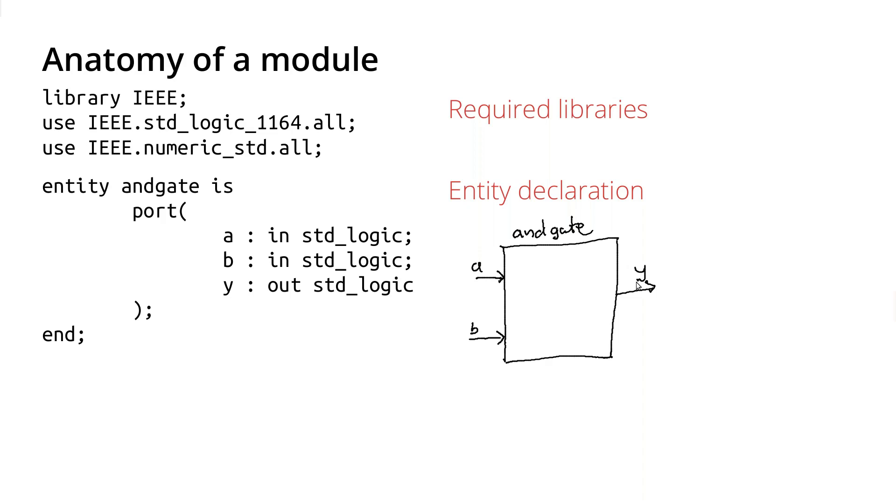So the entity declaration is describing this box here. It hasn't said anything about what's inside the box, but it has just described the name of the box and all of its inputs and outputs and their type.